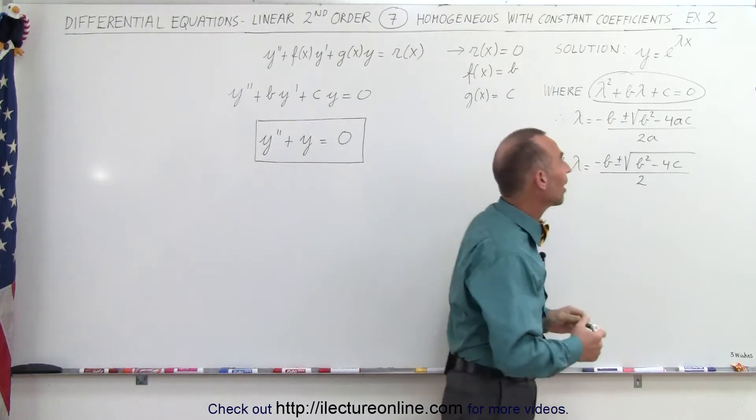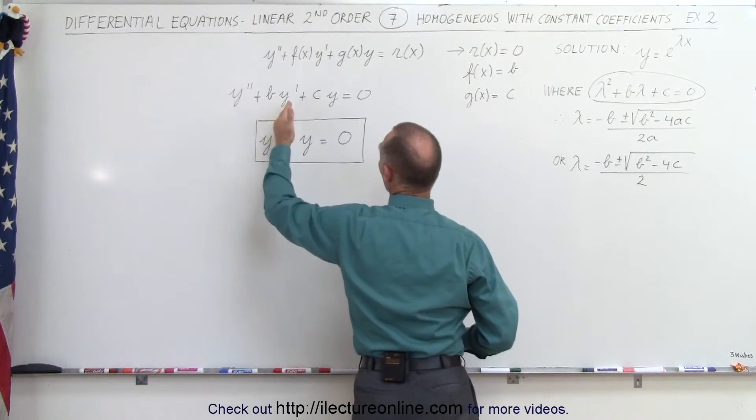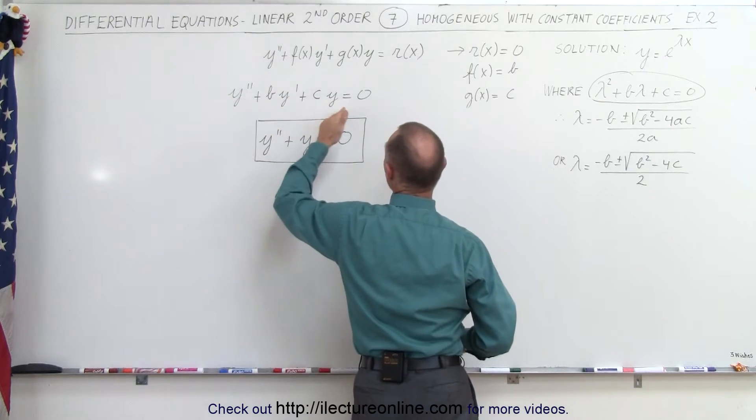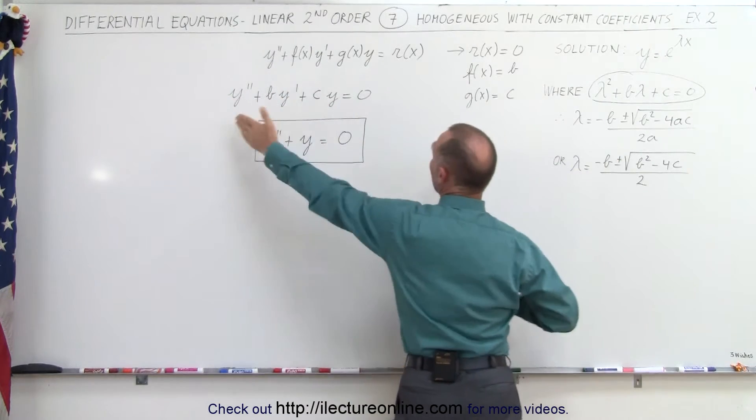where lambda can be found by taking the coefficients in front of y double prime, y prime, and y term to be a, b, and c.